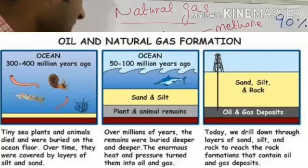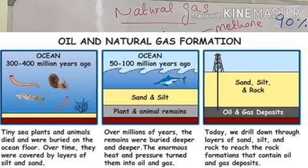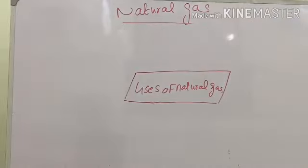As seen in the picture, formation of natural gas takes place in three steps. First, when plants or animals die, they go under the crust of the earth for millions of years. With the pressure and temperature of the earth, they break down into hydrocarbons and gas is formed. Then gas companies drill and extract the gas from the ground.